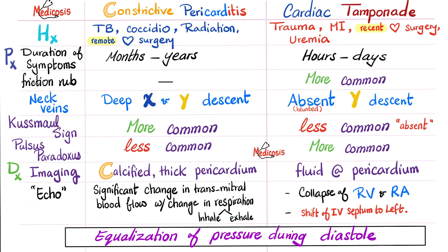On echo: for constrictive pericarditis, there is significant change in transmitral blood flow with variation in respiration — because every time the left ventricle tries to relax, it hits the constrictive calcified pericardium. In cardiac tamponade, echo will show collapse of the right ventricle and right atrium due to fluid, plethora in the inferior vena cava, and a shift of the interventricular septum from right to left — the right ventricle adapts by pushing the septum toward the left ventricle, lowering blood pressure and causing pulsus paradoxus. Both diseases have equalization of pressure in all four chambers during diastole.